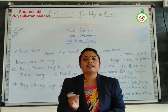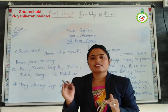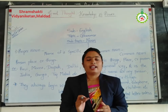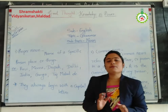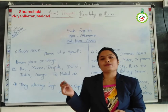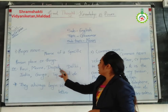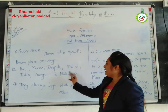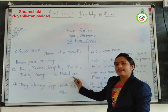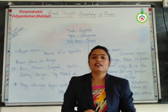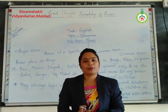When we speak of a specific person, it is only one specific individual. I will write some examples on the whiteboard. See on the whiteboard: Ravi, Meena, Deepa, Delhi, India, Ganga, Taj Mahal, etc. All of these are proper nouns.